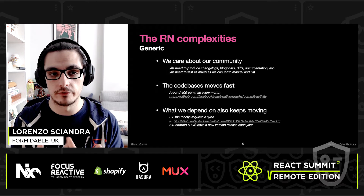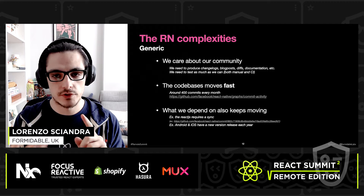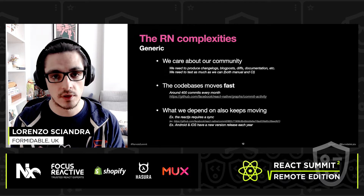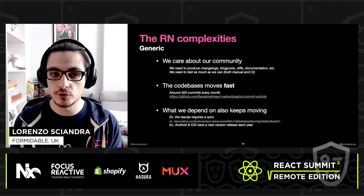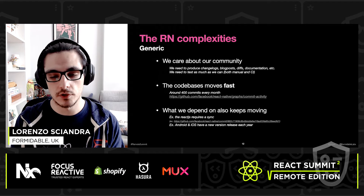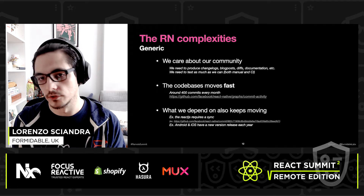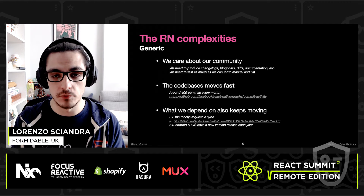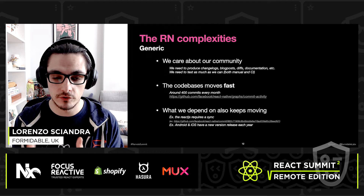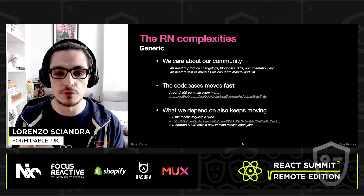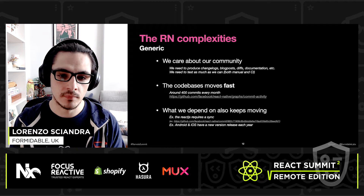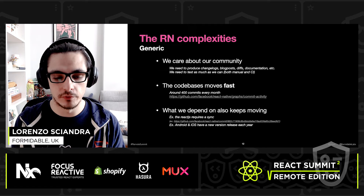In React Native, where we feel strongly about this, we have the changelog, the blog post, we generate diffs so the Upgrade Helper can show what you need to do, we have documentation, and a lot more. We also do a lot of manual testing — yes, we trust CI, but we also don't, so we do manual testing extensively. The codebase moves really fast — around 1,400 commits landing every month.